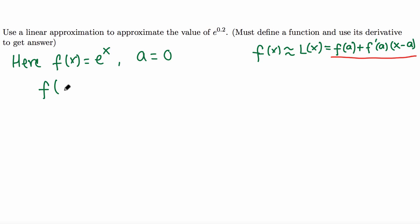Let's evaluate the function at a. So f(a), which is f at 0, when we evaluate this function we replace x by 0, so e to the 0, which is 1. So that's the f(a) part.